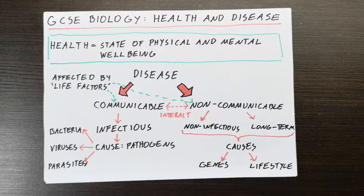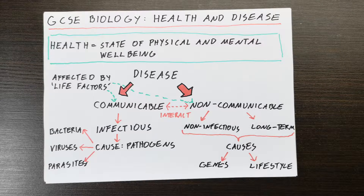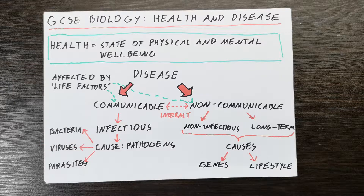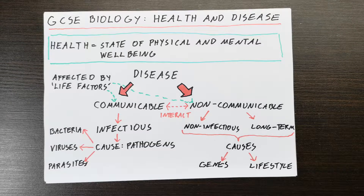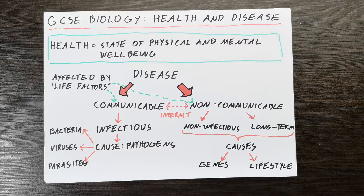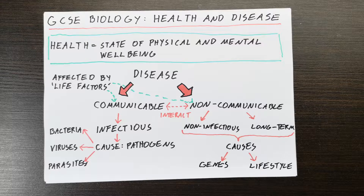The cause of communicable diseases are pathogens — the general term for microorganisms that cause disease. Bacteria are possible pathogens; for example, a sore throat can be bacteria-caused. Viruses can cause many communicable diseases, such as the HIV virus causing AIDS. You can also have parasites causing diseases, such as plasmodia in malaria. Communicable diseases are almost exclusively caused by pathogens.